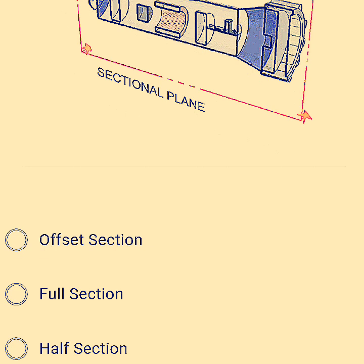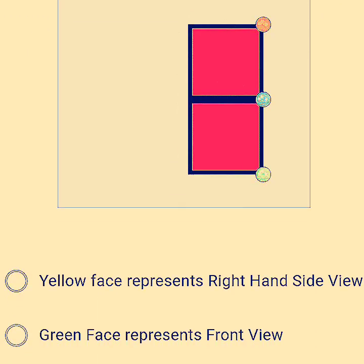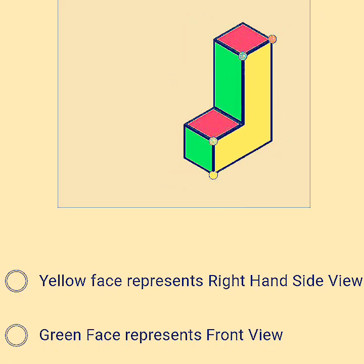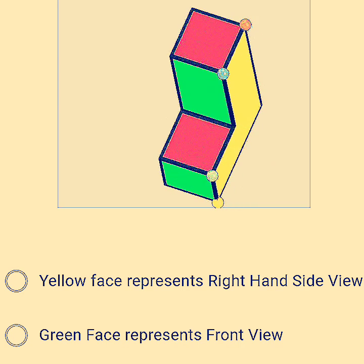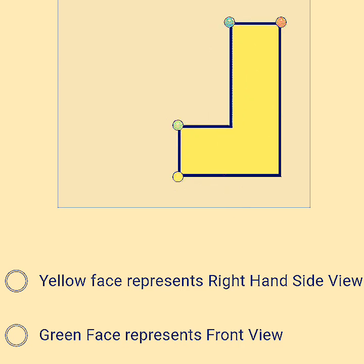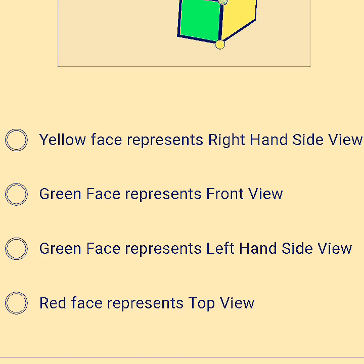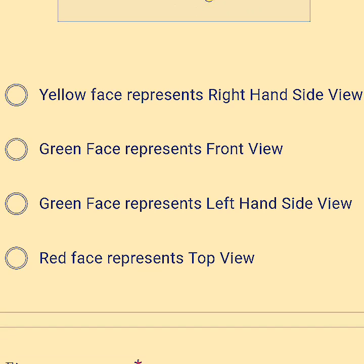Next, incorrect statement for this given animation. If you see this orientation, yellow face represents the right-hand side view. Of course the green is front view, red is top view. So here the correct answer, the wrong statement, is option C: green face represents left-hand side view. It's a wrong one because that is front view.